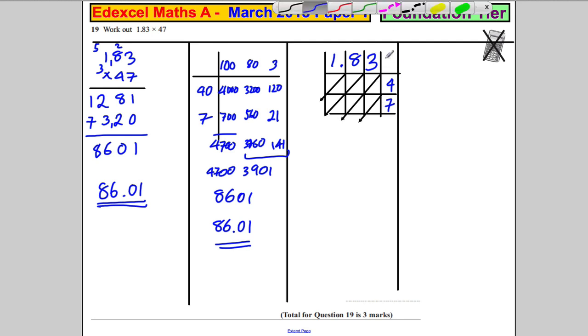And what we do is we say that 3 times 4 is 12, so put the 1 there and the 2 there. We say that 3 times 7 is 21, put the 2 there and the 1 there. We say that 8 times 4 is 32, put the 3 there and the 2 there. We say that 8 times 7 is 56, put the 5 there and the 6 there. We say 4 times 1 is equal to 4, so 0 and 4. And we say that 7 times 1 is equal to 7, so 0 and 7.